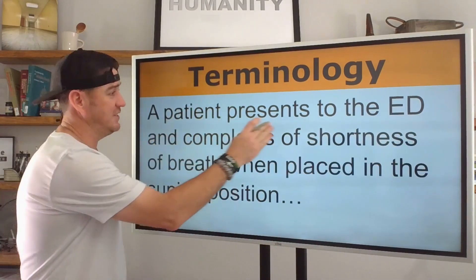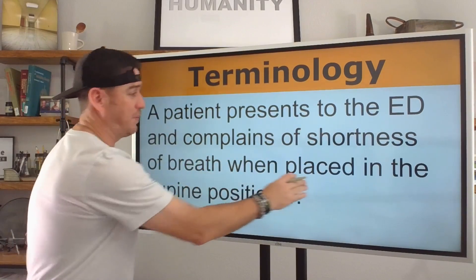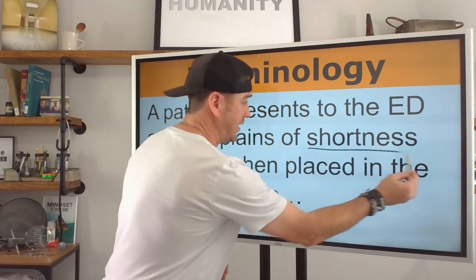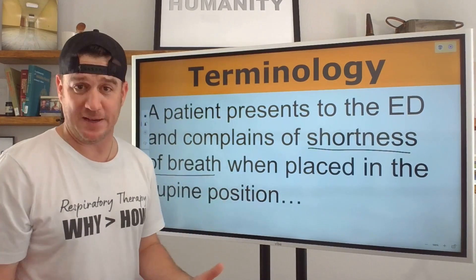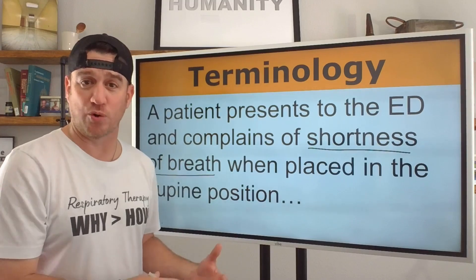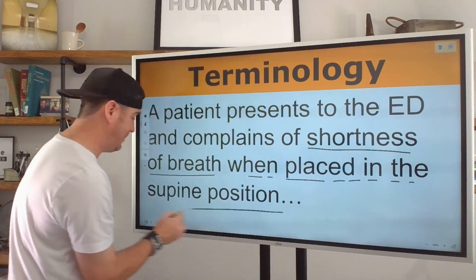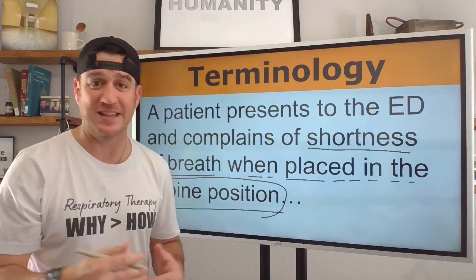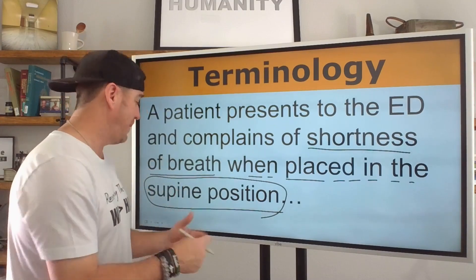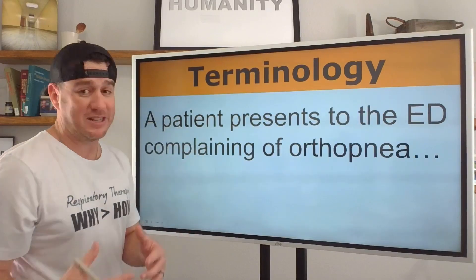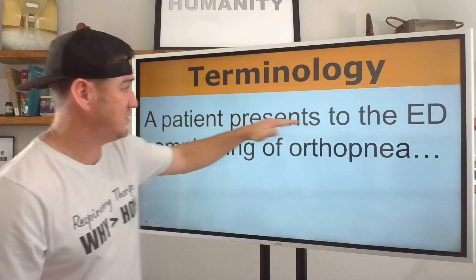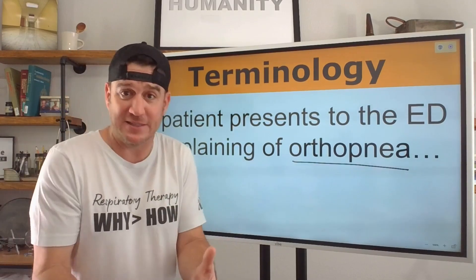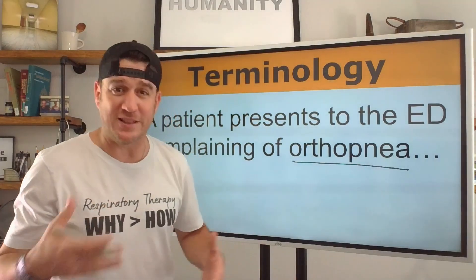A patient presents to the ED and complains of shortness of breath when placed in the supine position. There's information being told here — shortness of breath, which we know is dyspnea, but it went on to describe how it presented: when placed in the supine position. Patients should not get short of breath in the supine position. What we know has just been described is orthopnea. What is orthopnea? Orthopnea is dyspnea in the supine position. We might also see it presented as: a patient presents to the ED complaining of orthopnea.